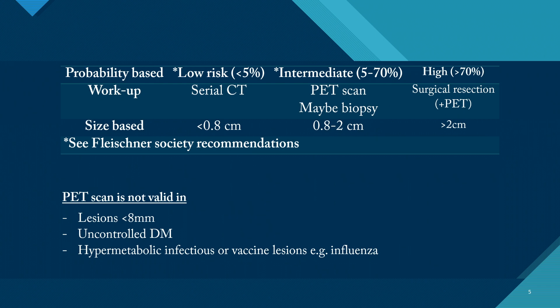PET scan is not valid in all situations. Even if a patient's risk is intermediate and the answer would normally be PET scan, you have to be careful in the question. Hypermetabolic states — such as uncontrolled diabetes mellitus, hypermetabolic infections, or recent vaccines like the influenza vaccine — will give you a false positive PET scan, so a PET scan cannot be done in such cases.